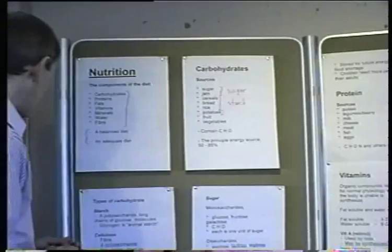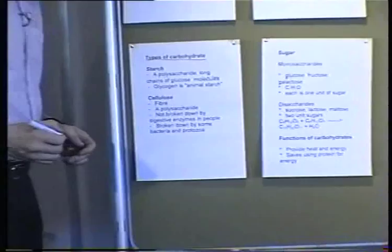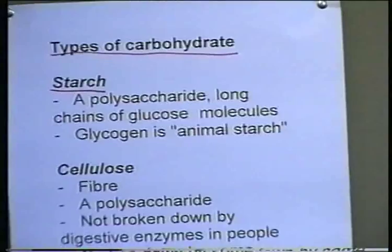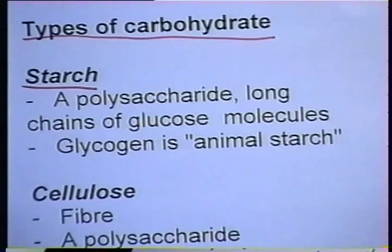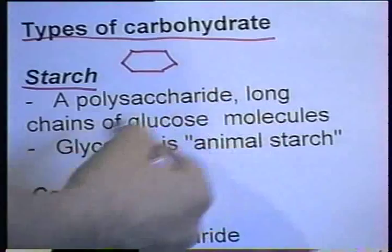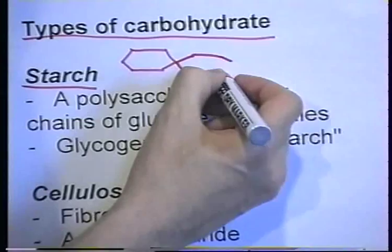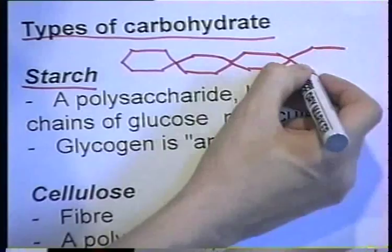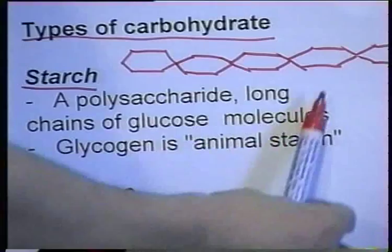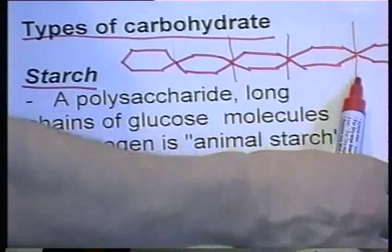Let's look at the types of carbohydrate. The first type is starch. Carbohydrates are made up of individual units, each containing carbon, hydrogen, and oxygen. In the case of starch, it is a polysaccharide — meaning it contains many of these units comprising a long polymer molecule. Starch consists of long chains of glucose molecules.